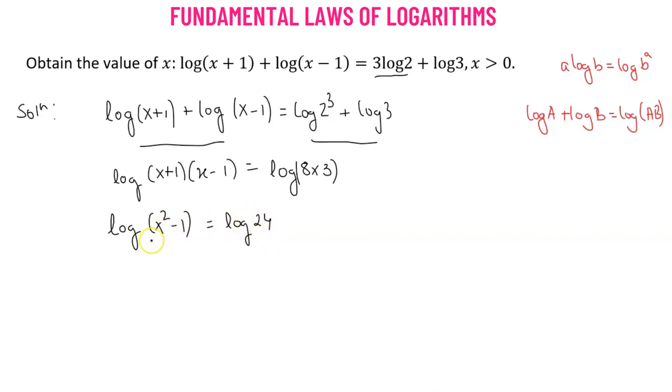Now, when the base is not provided, by default it's 10. Since both the two logarithms have the same base of 10, we can equate them and get rid of the logarithm to get x squared minus 1 equals to 24.